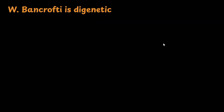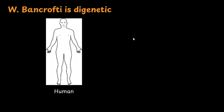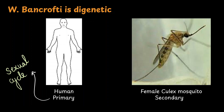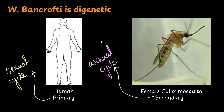Wuchereria bancrofti is a digenetic parasite. In previous videos we have been learning about parasitic organisms — infections in humans caused by protozoans and worms. We have seen monogenetic parasites, meaning organisms that require only one host. But this worm is digenetic, meaning it requires two hosts for its survival. The first is human and the second is specifically the female Culex mosquito. The human is the primary host and the mosquito is the secondary or intermediate host.